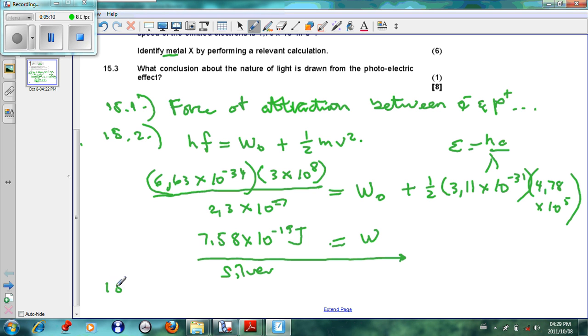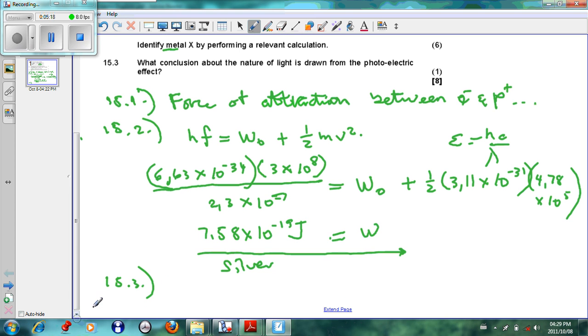Question 15.3: What conclusion about the nature of light is drawn from the photoelectric effect? The conclusion is that light has a particle nature. Light has a dual nature - it has a particle nature as defined by the photoelectric effect, and it has a wave nature as defined by diffraction, which is another section of the matrix syllabus.